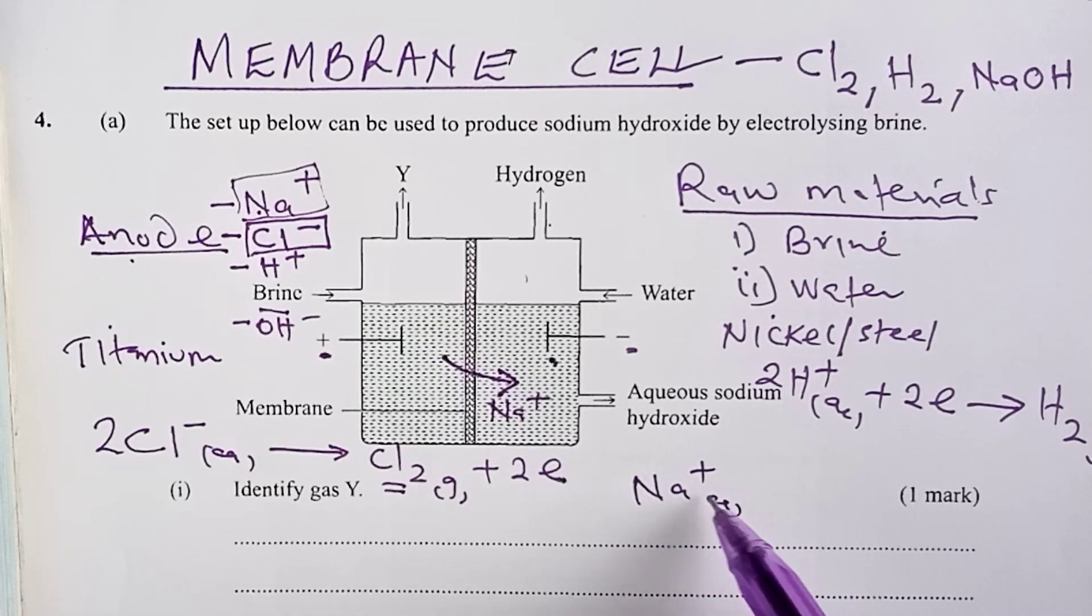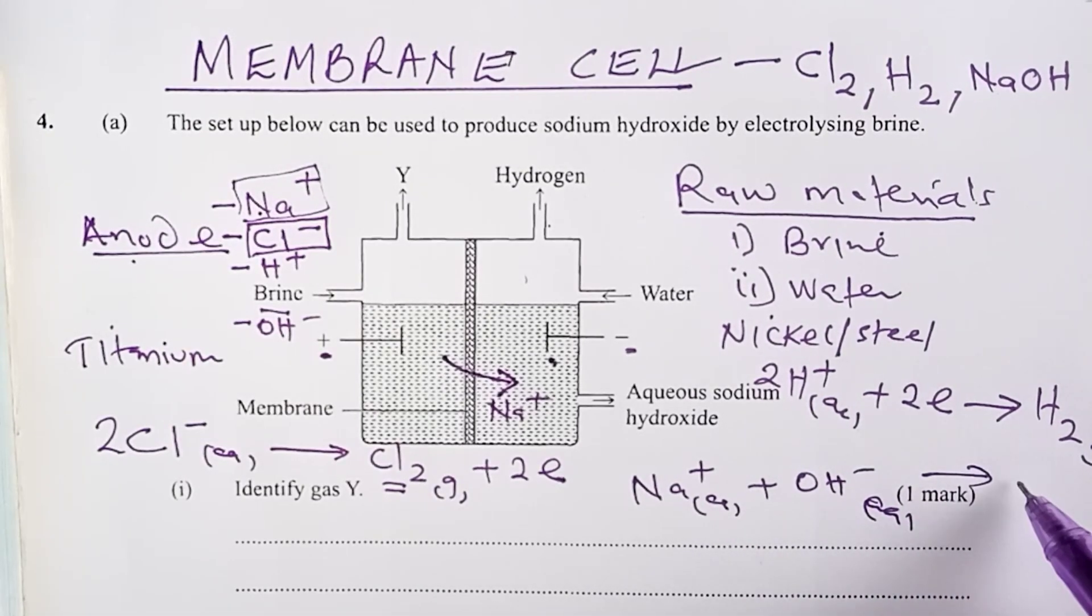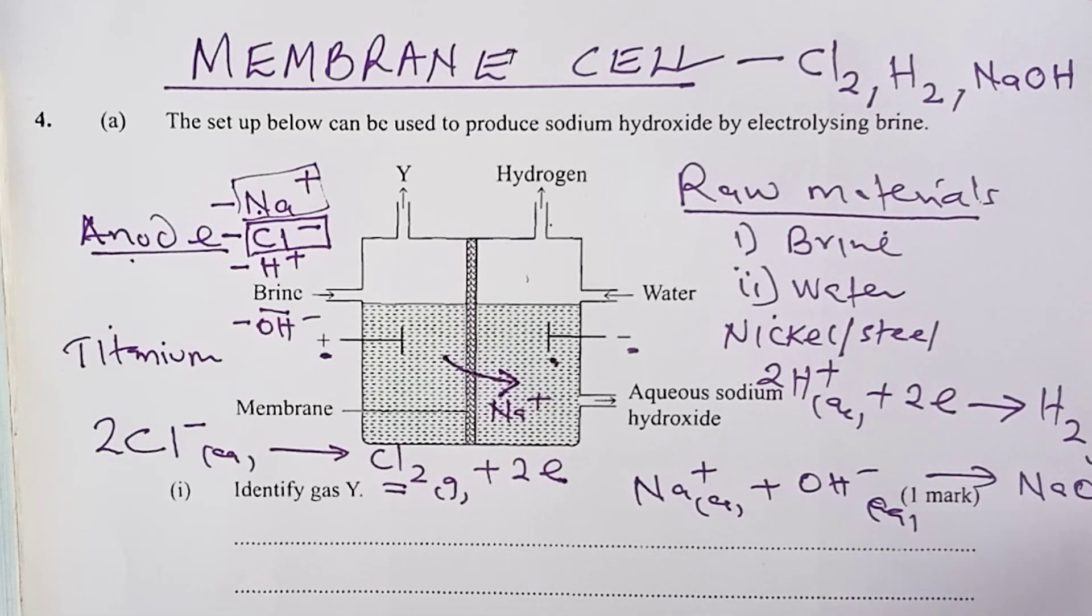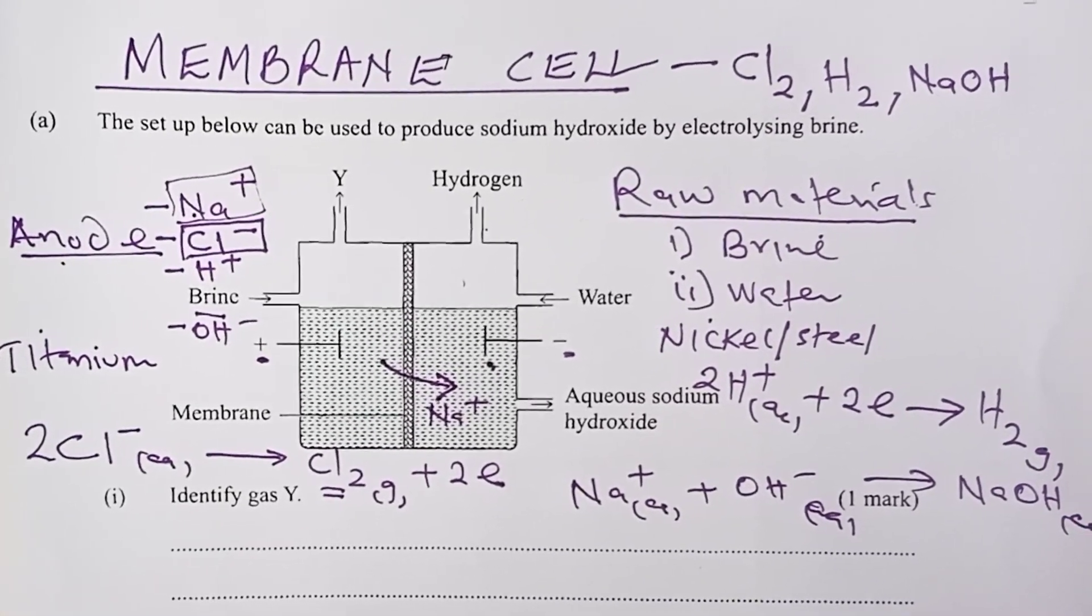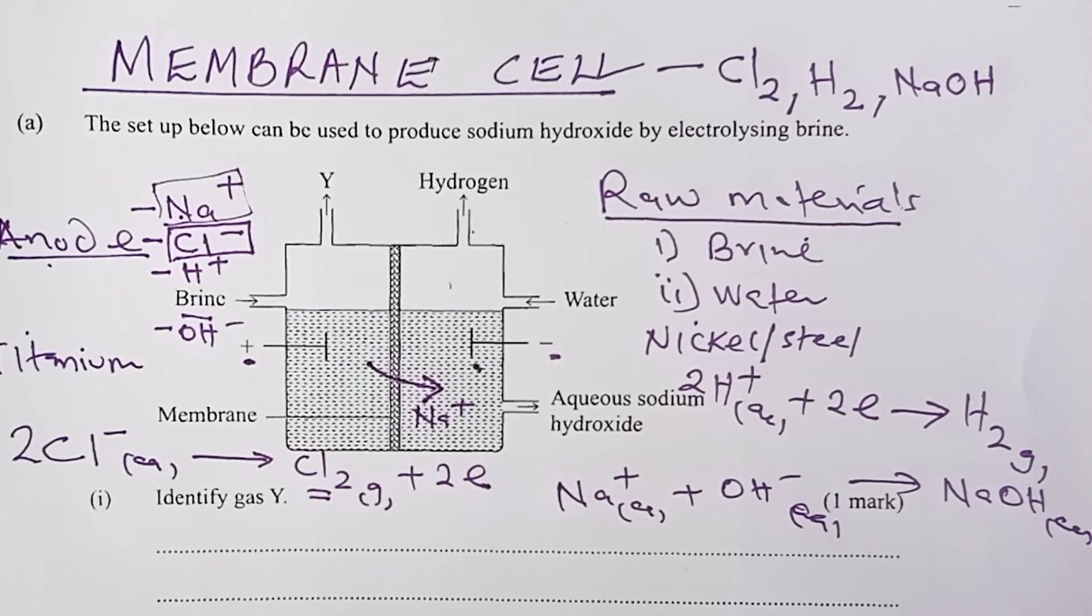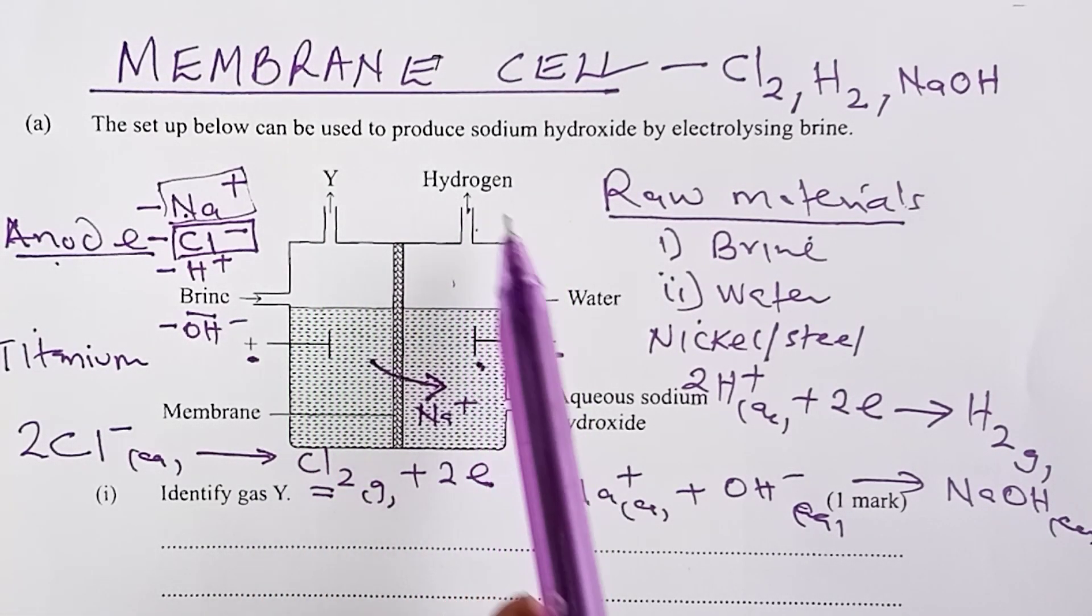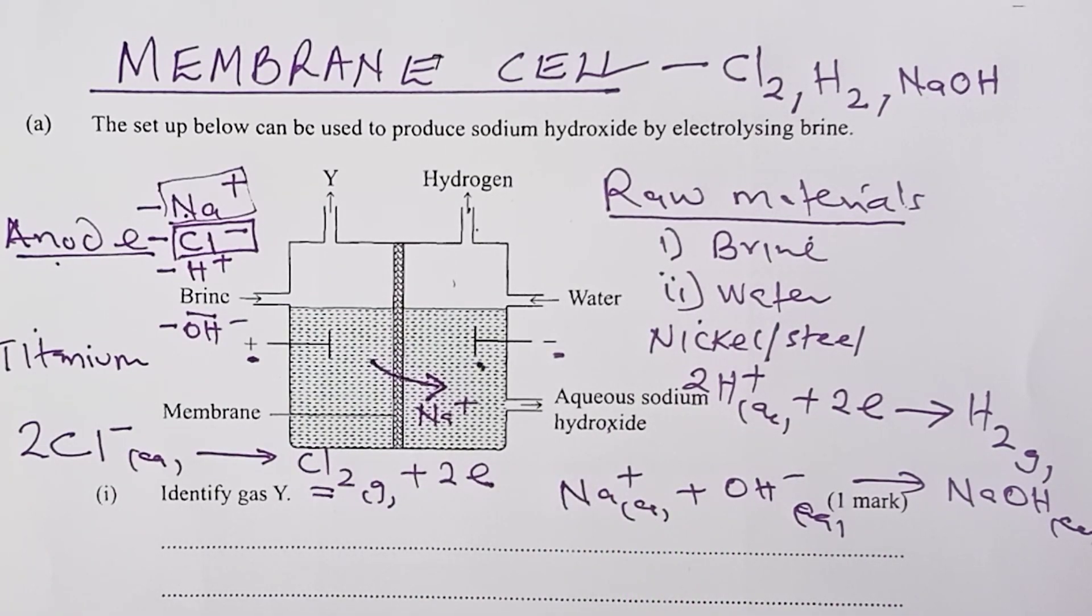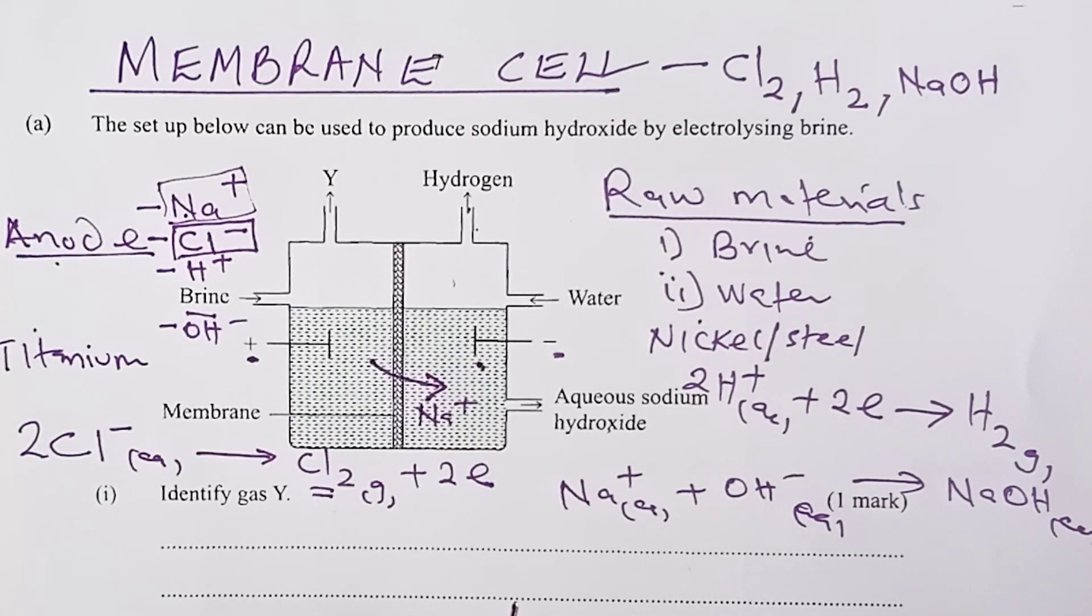So, this way, we are able to get our three products as described at the beginning of our video, that membrane cell is able to give us chlorine as gas Y, hydrogen, and sodium hydroxide. So, with that, we move now to 2013 and 2016, chemistry paper 2, question number 4, where we review the questions that were tested concerning the membrane cell.